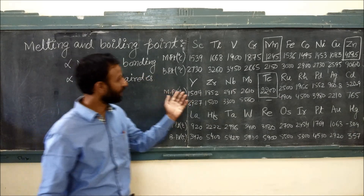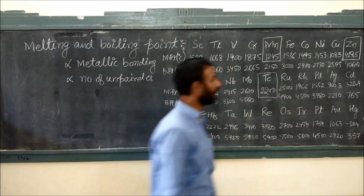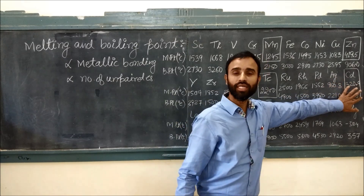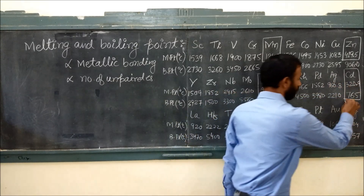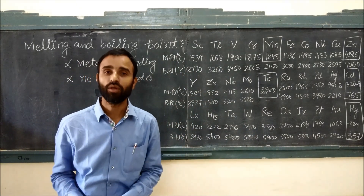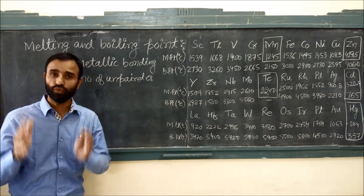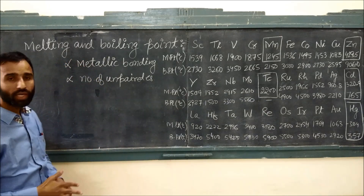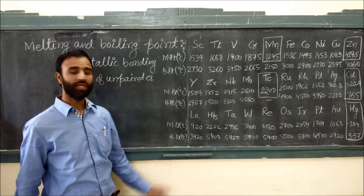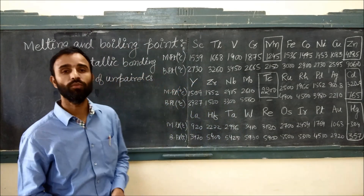The same is the case in the second transition series. For technetium, there is a dip for the same reason as for manganese. Cadmium has the lowest melting and boiling point for the same reason — because of its fully filled D10 configuration. Zinc, cadmium, and mercury all have the lowest melting and boiling points because they have no unpaired electrons, so their metallic bonding is weak. That's why the melting point of mercury is so low that it is a liquid at room temperature.